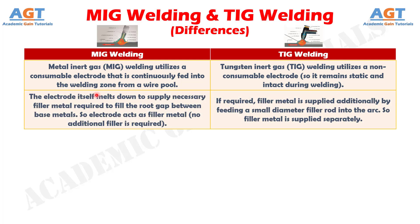Number 2: In MIG welding, the electrode itself melts down to supply necessary filler metal required to fill the root gap between base metals. So the electrode acts as filler metal and no additional filler is required, whereas in TIG welding, if required, filler metal is supplied additionally by feeding a small diameter filler rod into the arc, so filler metal is supplied separately.